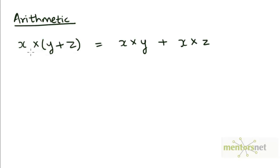Now in arithmetic, if we have an expression like x times (y+z), we can open up the parenthesis and distribute this multiplication operation over both operands. We can write this as x times y plus x times z.